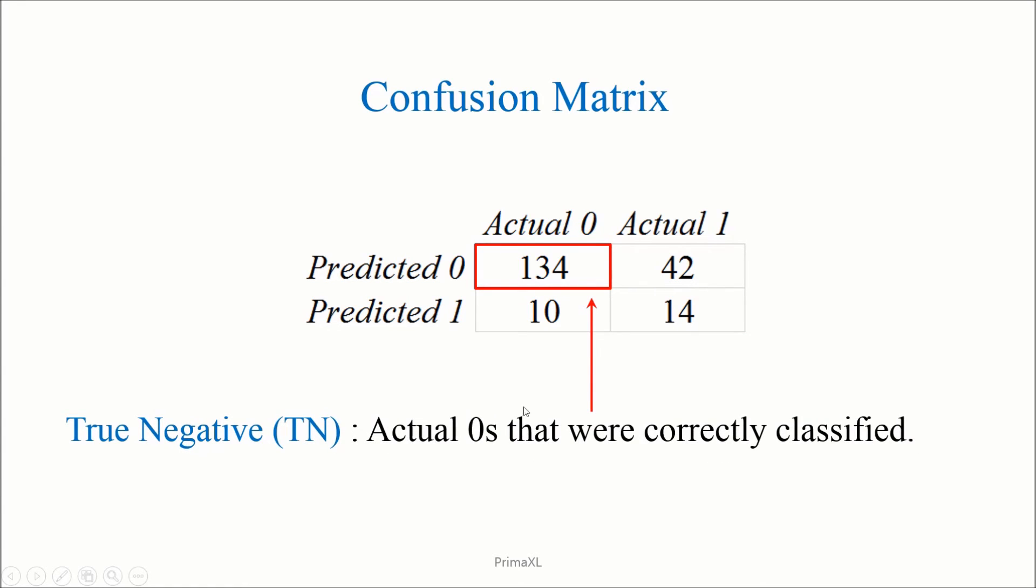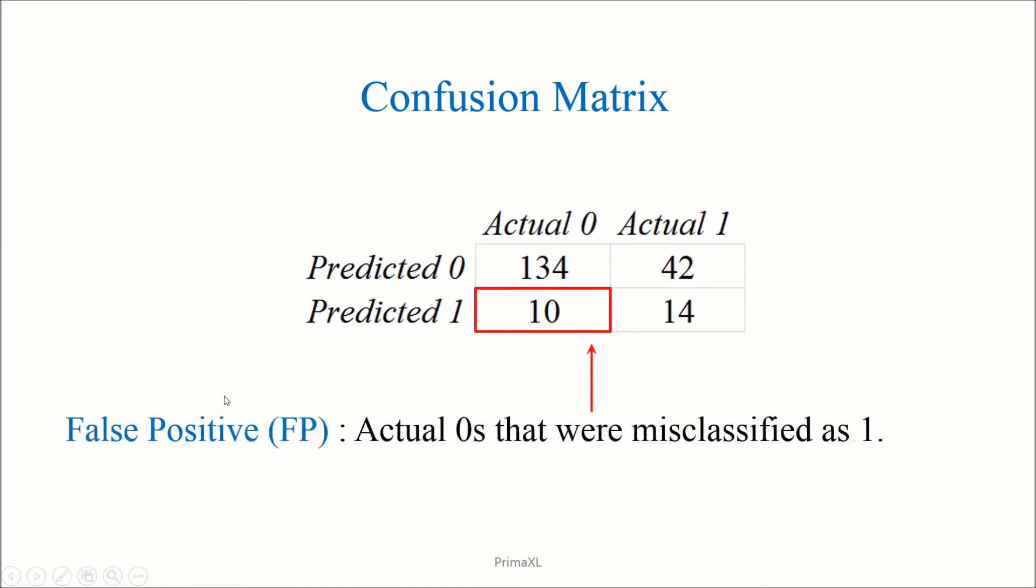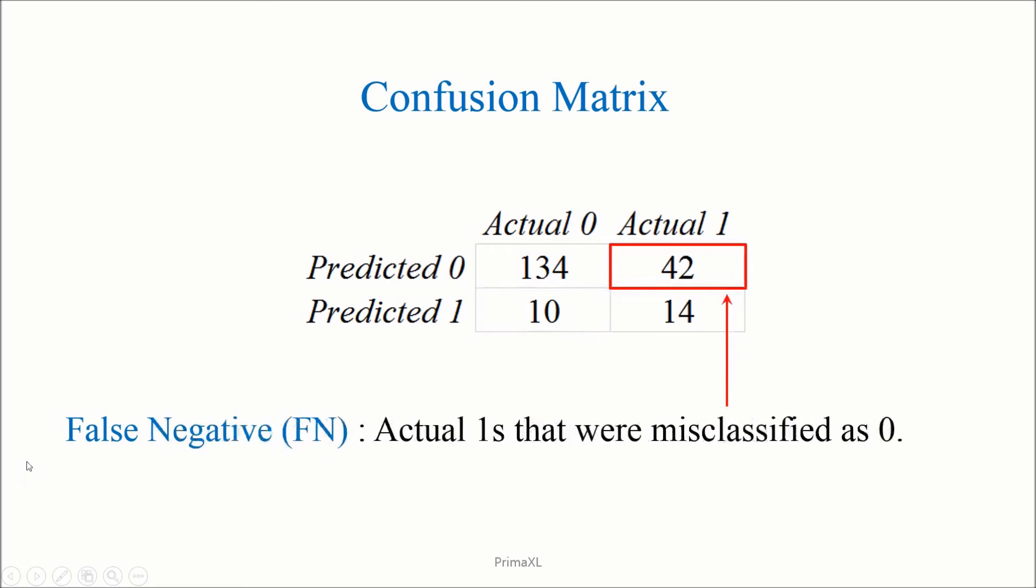And this element is called true negative. It counts the actual zeros that were correctly classified. This another element is called false positive. It counts the actual zeros that were misclassified as ones.